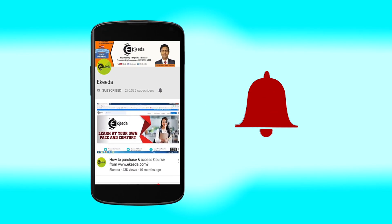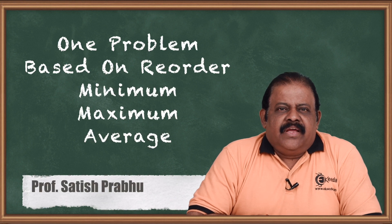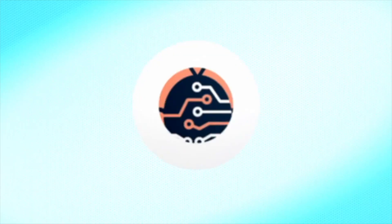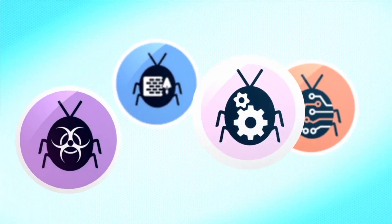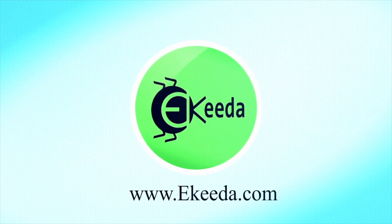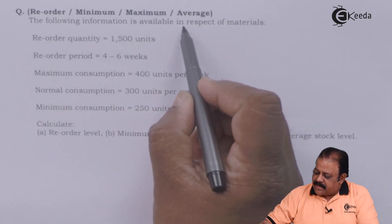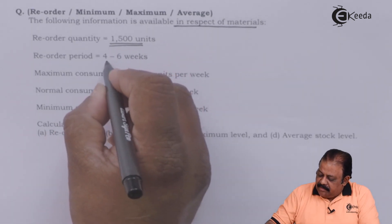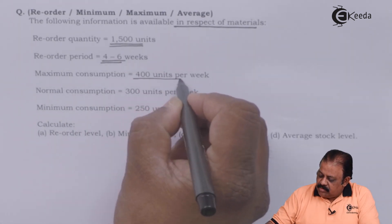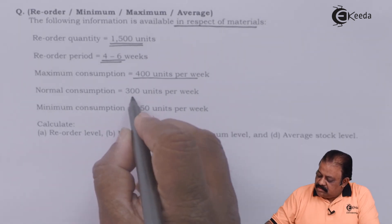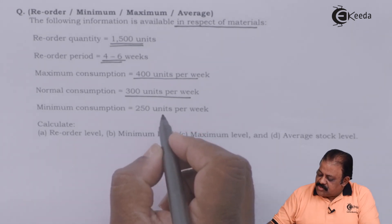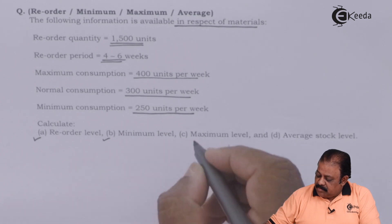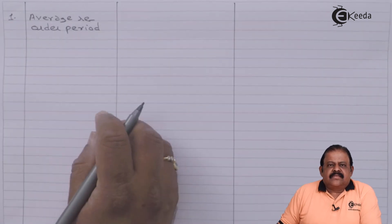Hello friends, today let us do one question on material cost where we'll be discussing reorder level, minimum stock, and maximum stock concepts. The following information is available in respect of materials: reorder quantity 1500 units, reorder period four to six weeks, maximum consumption 400 units per week, normal consumption 300 units per week, minimum consumption 250 units per week. We are required to calculate reorder level, minimum level, maximum level, and average stock level.